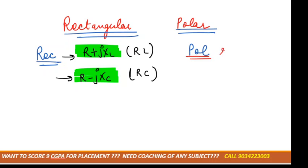For polar form, it is represented by R angle theta. In rectangular form we can only do addition and subtraction, and in polar form we can do multiplication and division only.